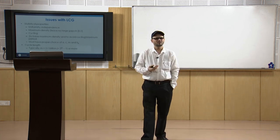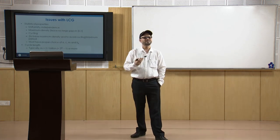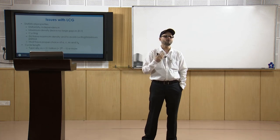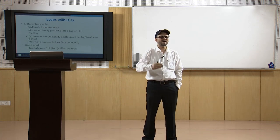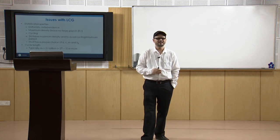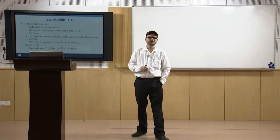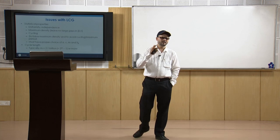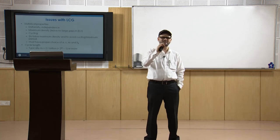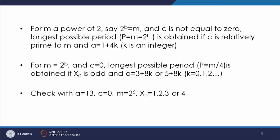Normally m is taken as 2 raised to the power 31 or even more — that is the requirement in today's world. For such a large generation of random numbers you require proper selection of these parameters. For m, it is normally taken as a power of 2.